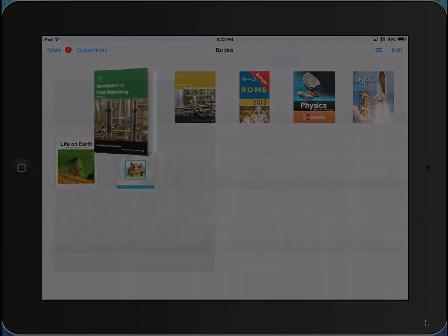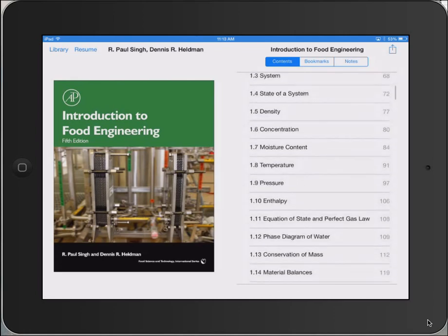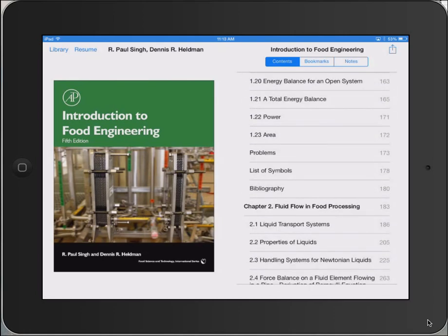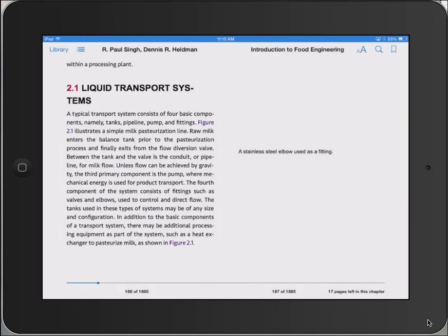In this video, we will look at some of the key features of the fifth edition of Introduction to Food Engineering. This edition is now available as a traditional print edition, an EPUB, and a new multimedia enriched version called EPUB3 that can be accessed via any tablet computer such as an iPad.